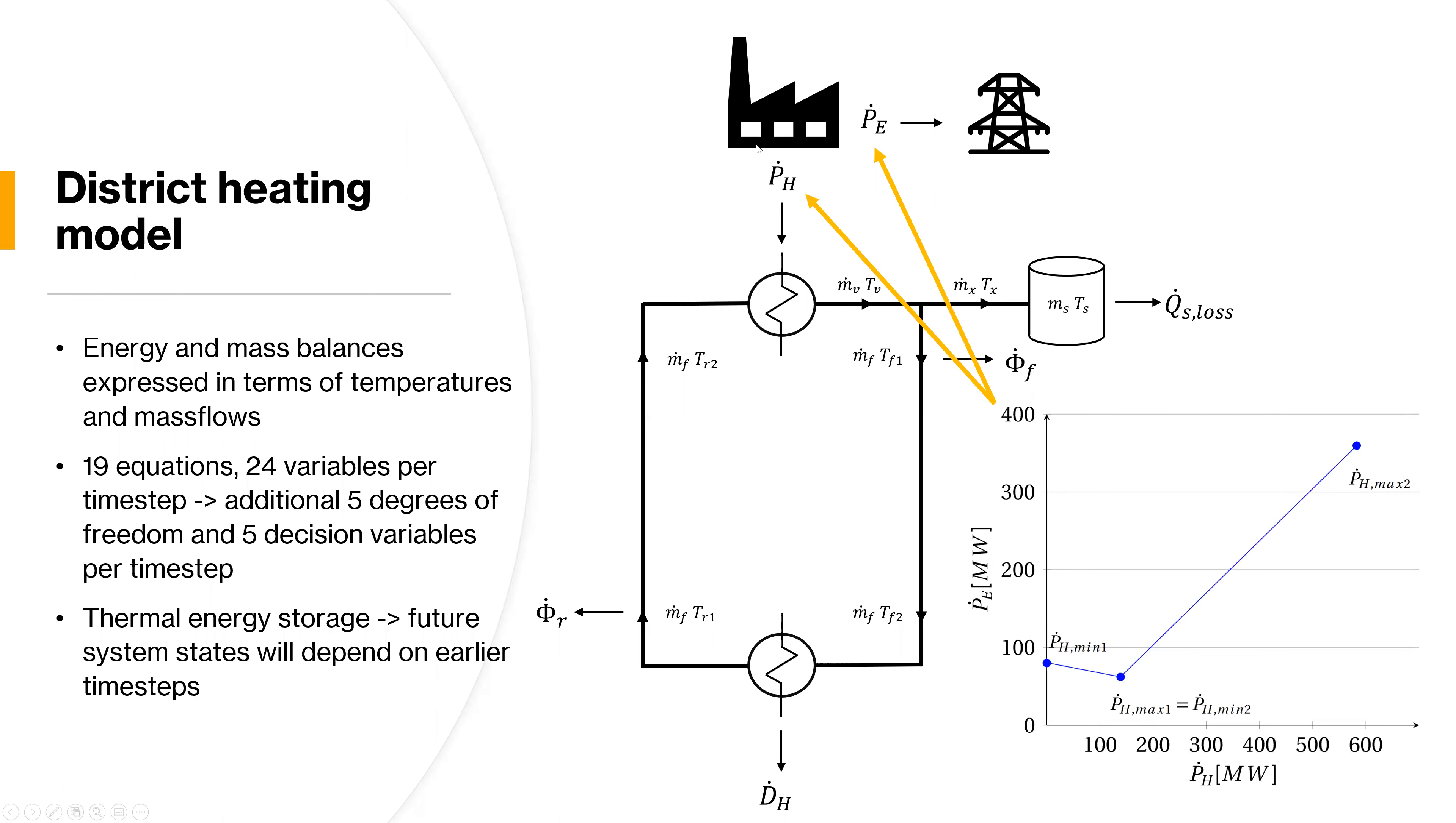The relationship between the heat and electricity production is modeled with this piecewise linear function, as we see here, where the production mode is controlled with a binary variable we call C. I won't go into further detail with the modeling, you can refer to the paper for seeing the full mathematical formulation.